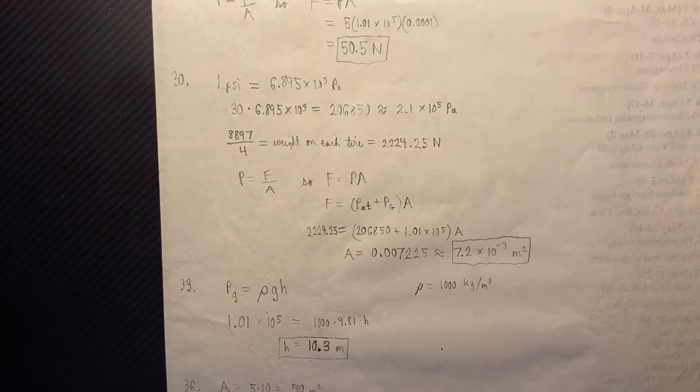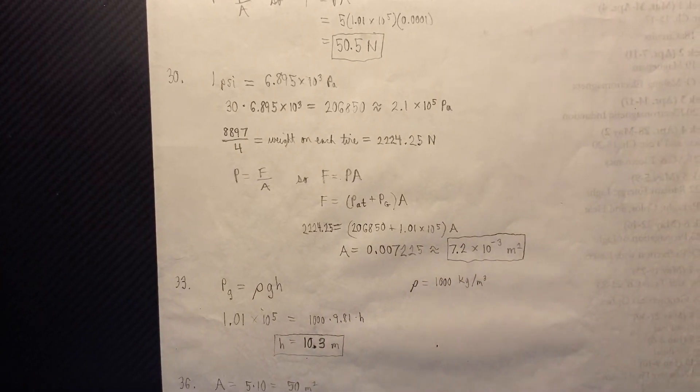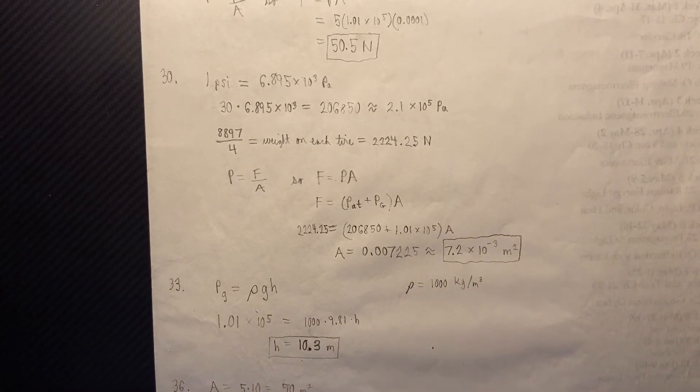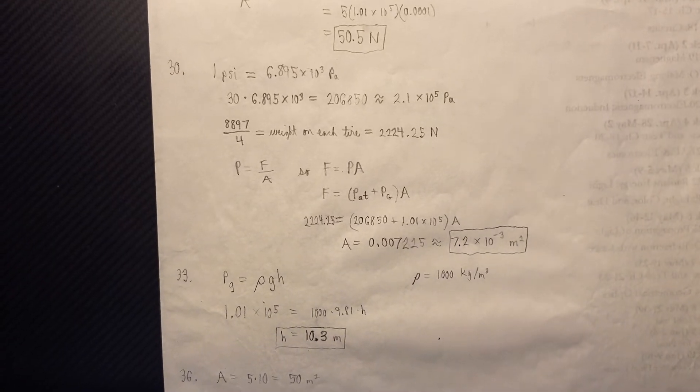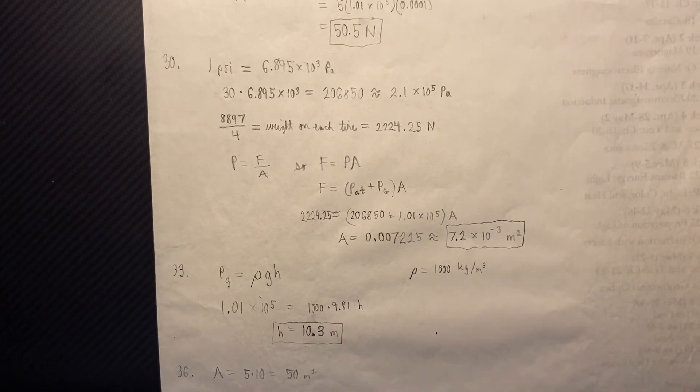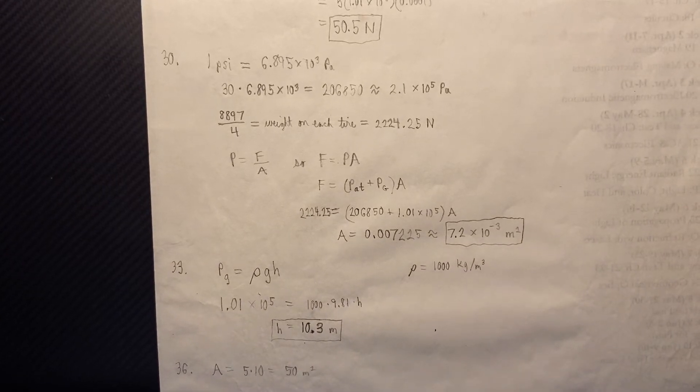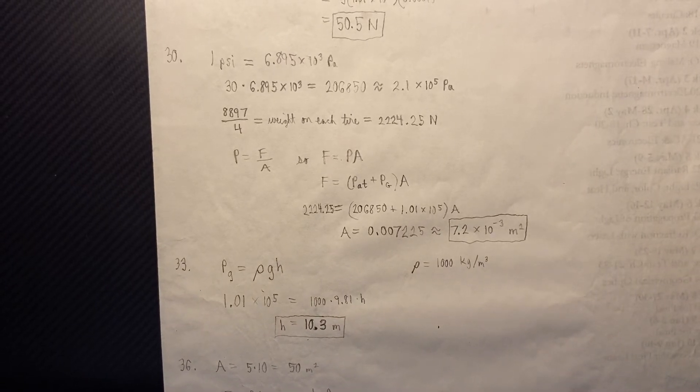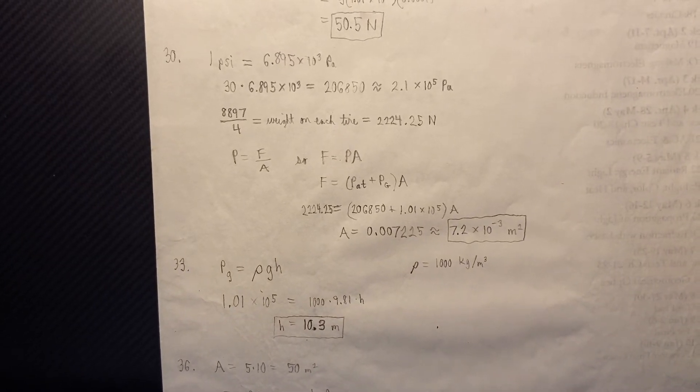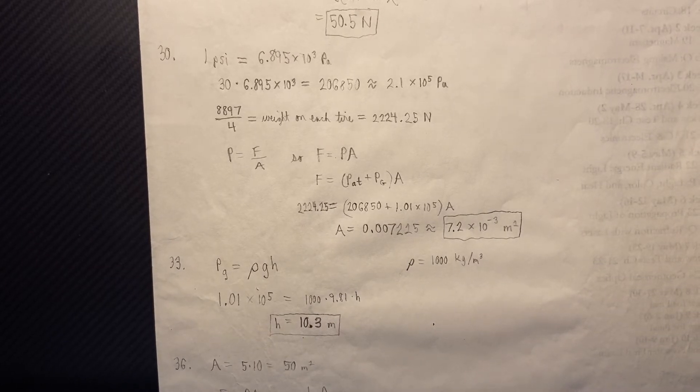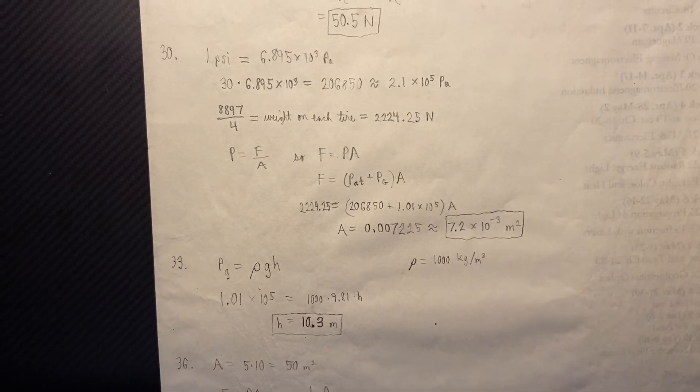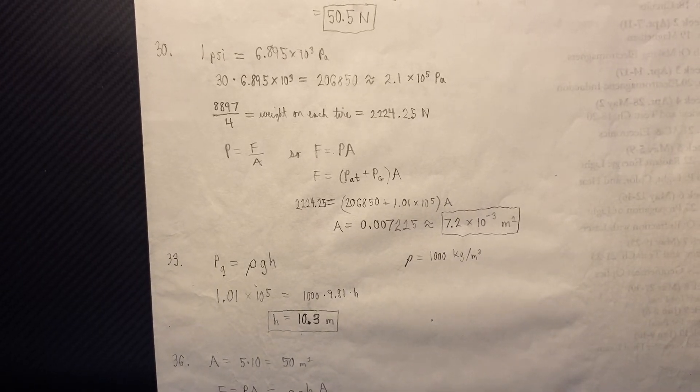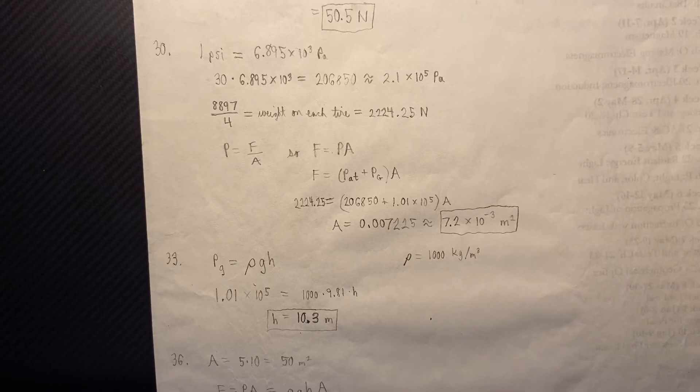And since we have 30 psi, we multiply the number by 30 to get 206,850 pascals. Now, we divide the total weight by the four tires because we want to find the weight on each tire, and that's 2,224.25 Newtons. P equals F over A, so F equals PA. And the P is the total pressure, so we add atmospheric pressure to gauge pressure, and that's why we add the 206,850 to the 1.01 times 10 to the 5th. And doing the algebra, we get an area of 7.2 times 10 to the negative 3rd square meters.